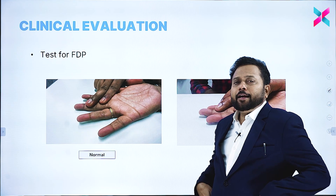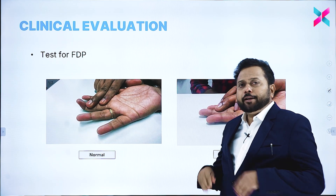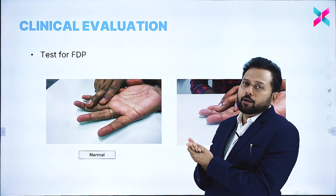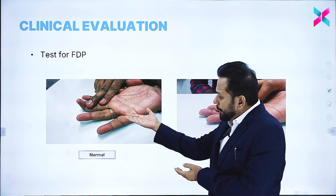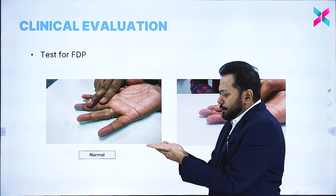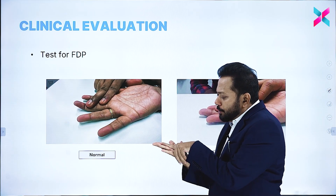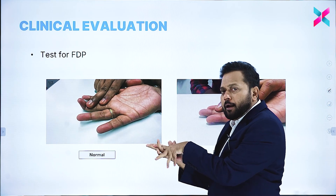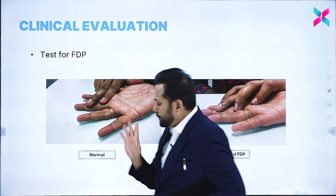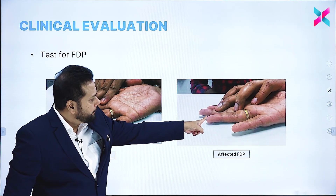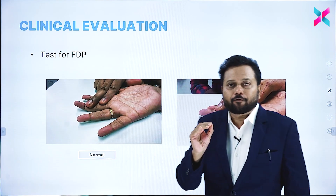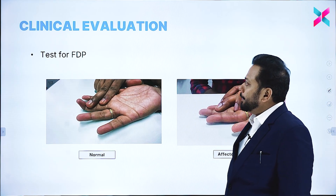Coming to clinical evaluation, as I already told you, mostly this is a type of muscle testing. The first muscle, because the medial half is supplied by the ulnar nerve, is flexor digitorum profundus. Ask the patient to place the dorsum of their hand on a table, give resistance over the proximal interphalangeal joint of the middle finger, and ask them to flex only the terminal phalanx. Normally they will be able to flex fully; if there is ulnar nerve affection, they cannot flex fully.